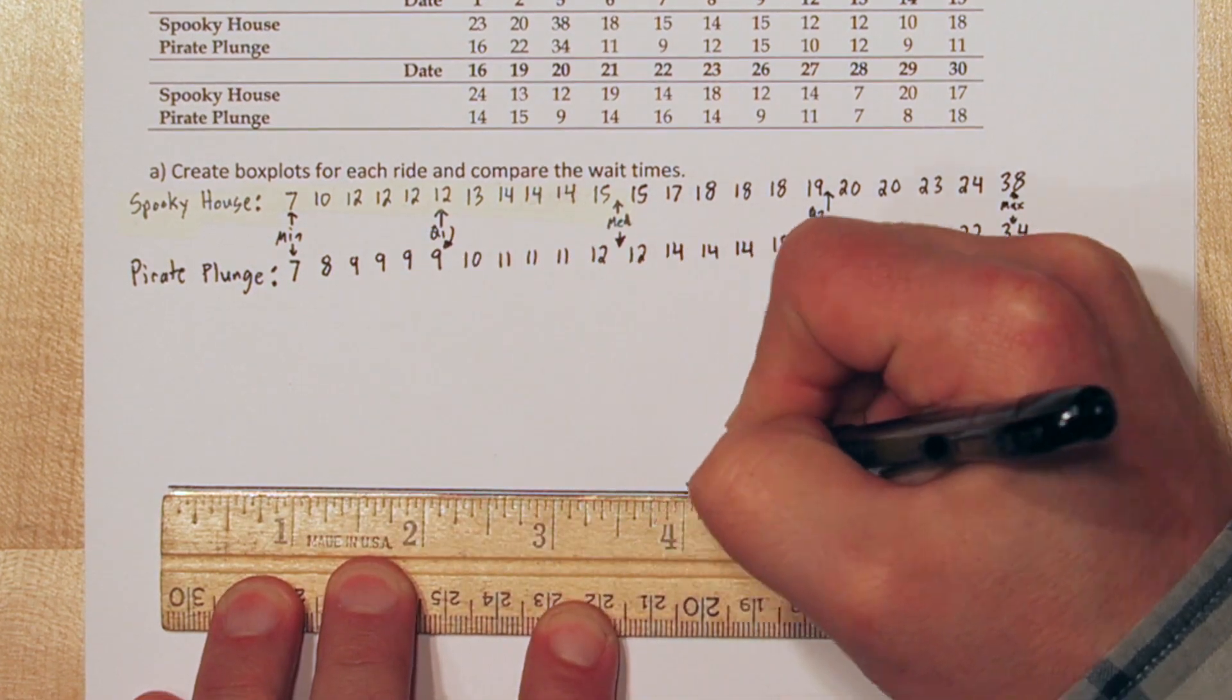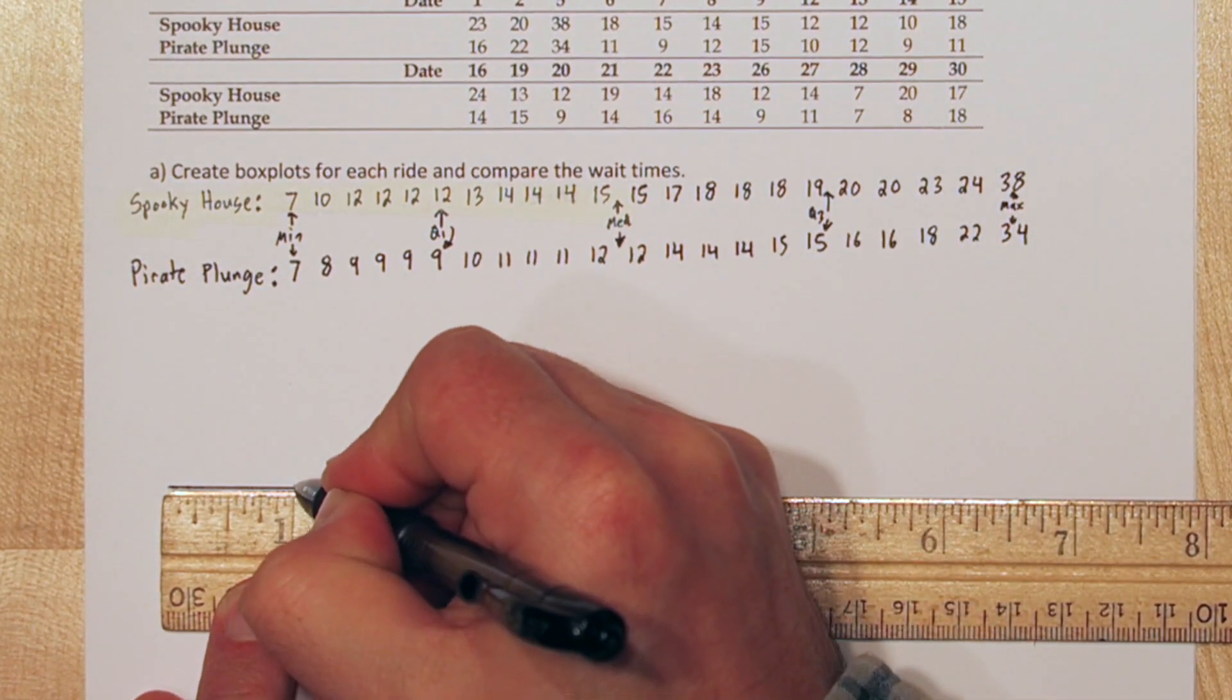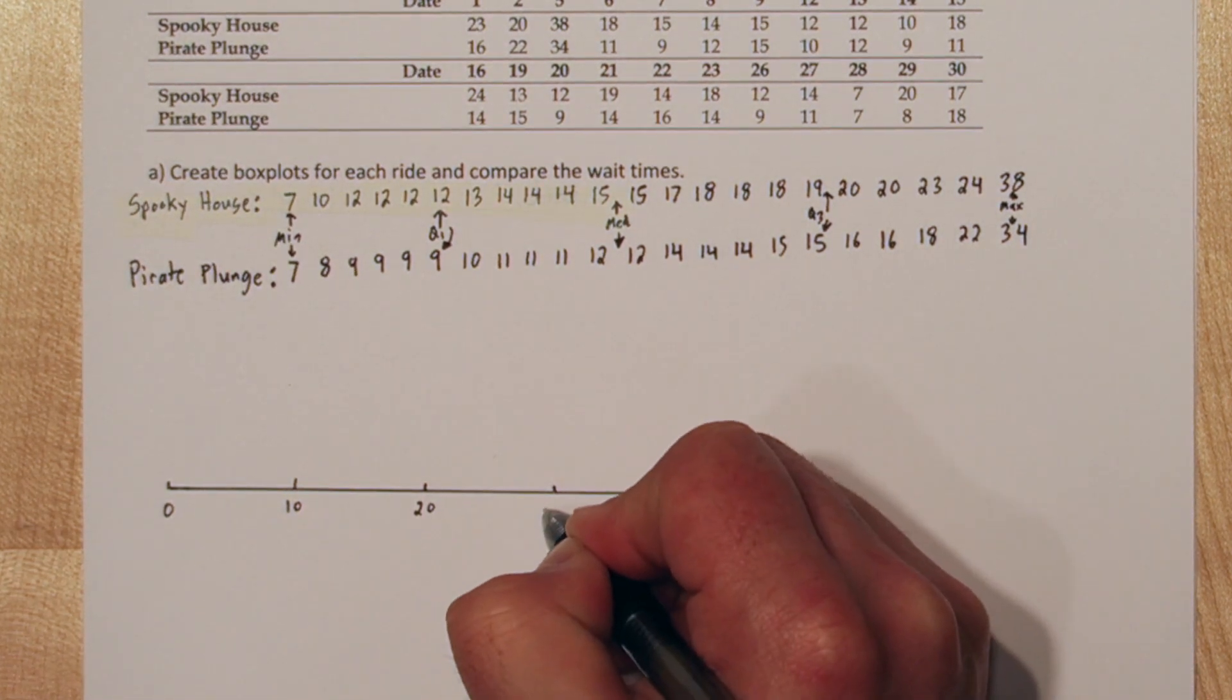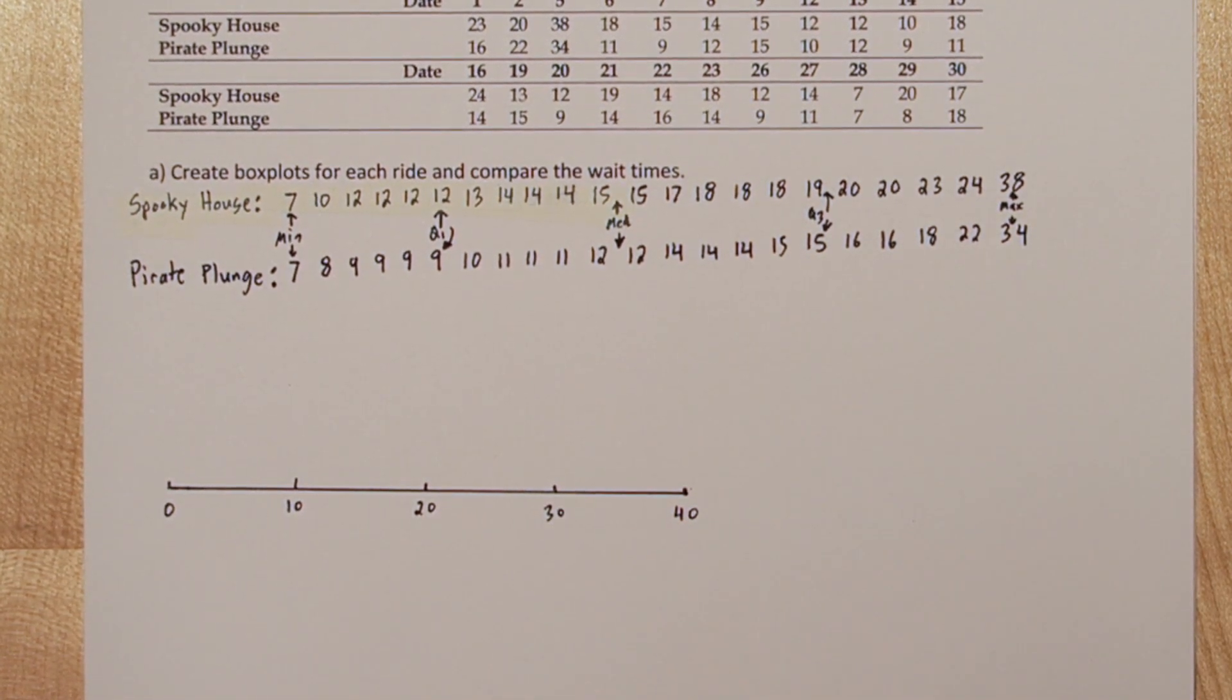For Pirate Plunge, our 5 number summary is the minimum, quartile 1, median, quartile 3, and the maximum. So 7, 9, 12, 15, and 34.